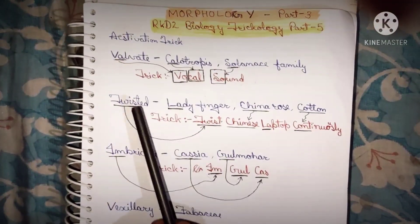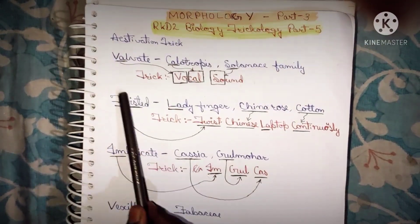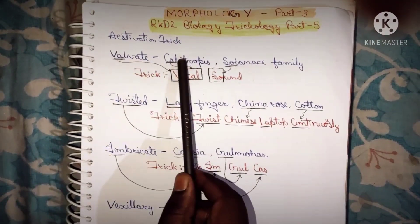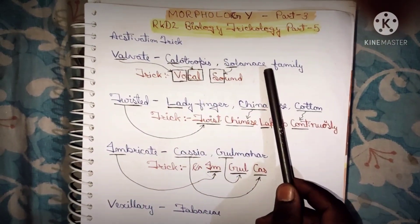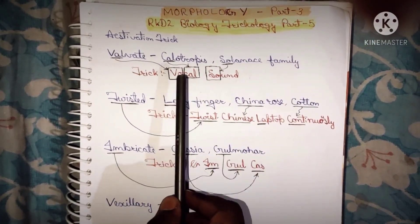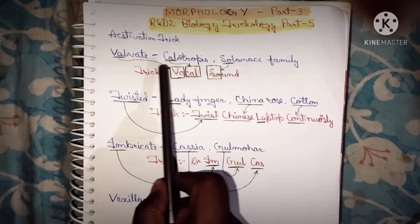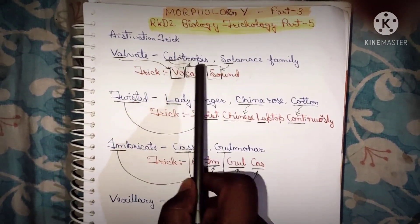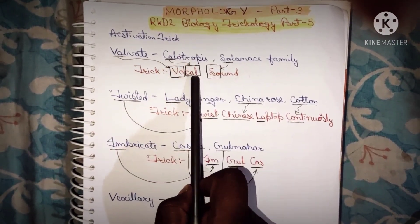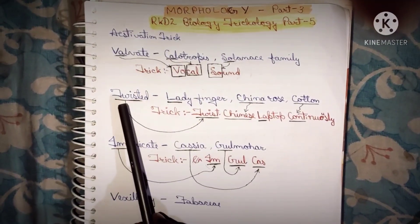So the four types are: Valvet, Twisted, Imbricate, and Vexillary. Valvet examples are Calotropis and Solanaceae family. The trick for Valvet is 'Vocal Sound' — Cal indicates Calotropis, and Sounds indicates Solanaceae.